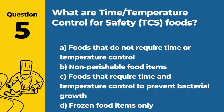Question 5. What are time/temperature control for safety (TCS) foods? Answer: C. Foods that require time and temperature control to prevent bacterial growth. Examples include dairy products, meat, poultry, fish, and cooked vegetables.